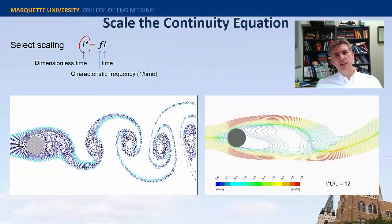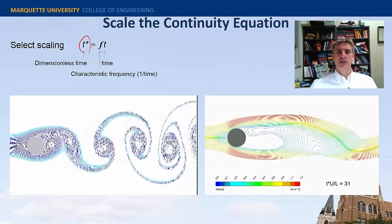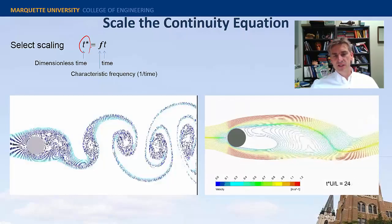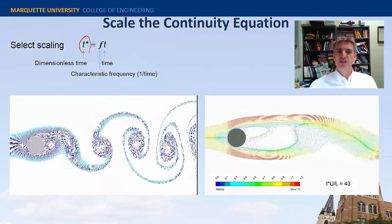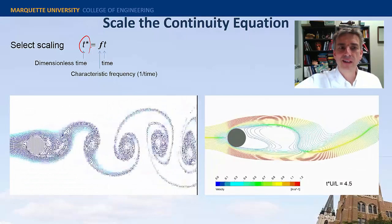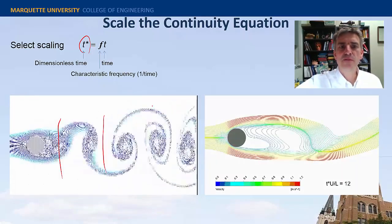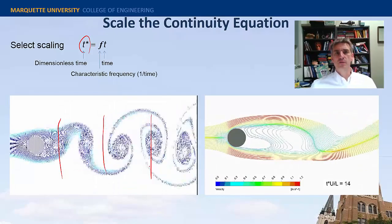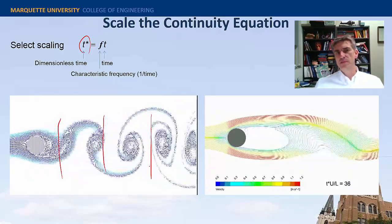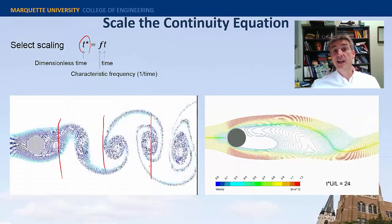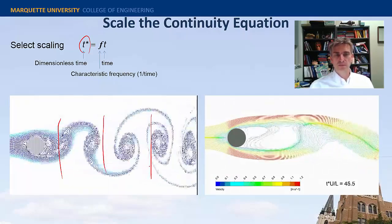Here's a flow field — flow over a circular cylinder at high enough Reynolds numbers such that we get vortex shedding, which occurs at very regular intervals. This is a kind of embedded frequency within the flow field, and so it would be an obvious choice to pick this frequency as our characteristic frequency for this particular flow field.